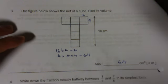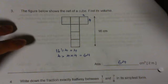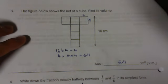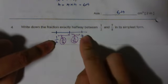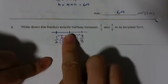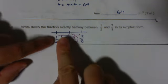Question 4. Write down the fraction exactly halfway between half and 7 over 8 in its simplest form. Now, if I draw a number line, half and 7 over 8, what I'm looking for is exactly half in between these two fractions.